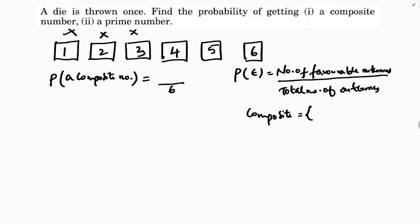2 is prime, 3 is prime. So 4 is the first composite, then 6.